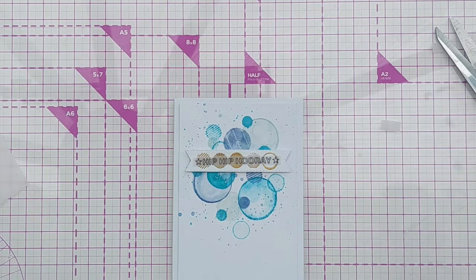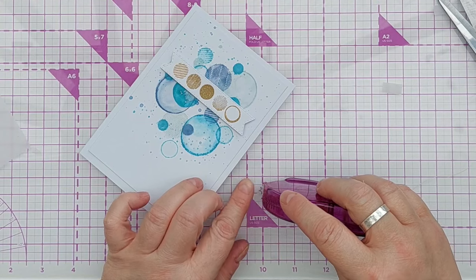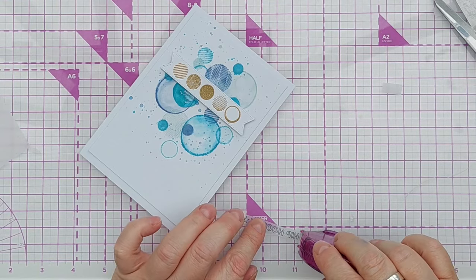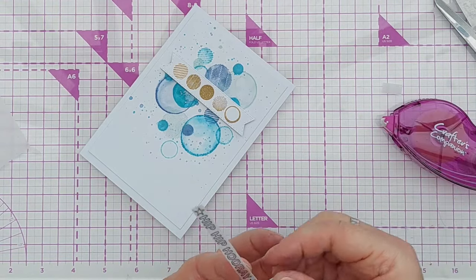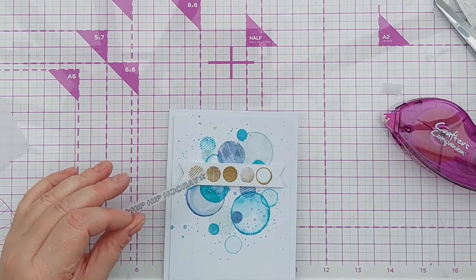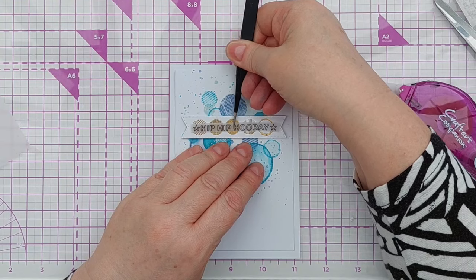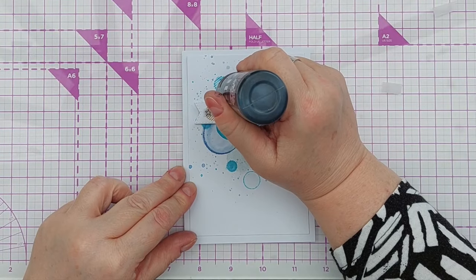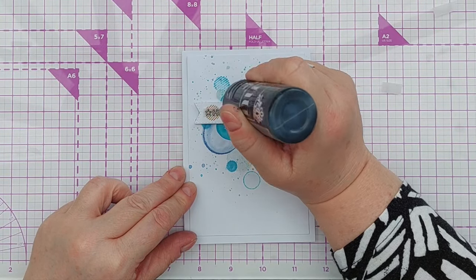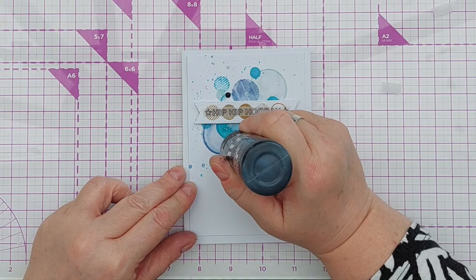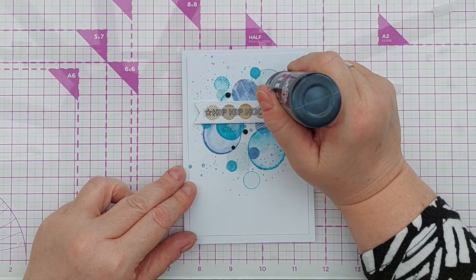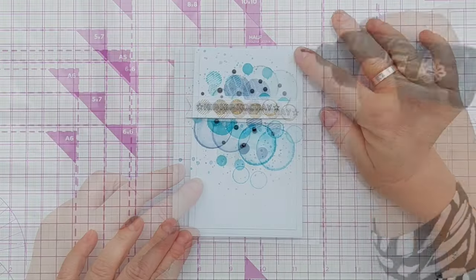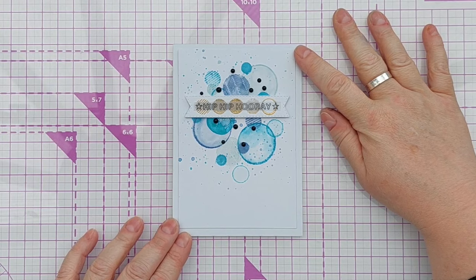To adhere the vellum, I've got my Crafter's Companion tape runner, which is great for vellum—it doesn't tend to show through an awful lot. And I think just to bring in a bit of contrast and because we've got a black sentiment, I'm going to add a few black Nuvo drops. So that's this card finished. Not so much a repeating pattern but a different way of using shape stamps.